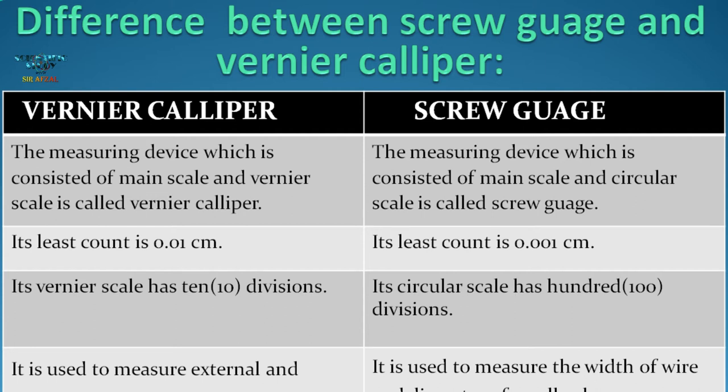The first point: the measuring device which consists of a main scale and vernier scale is called Vernier caliper. The measuring device which consists of a main scale and circular scale is called screw gauge.